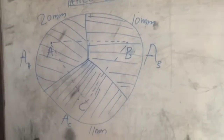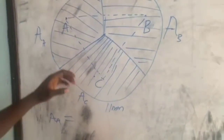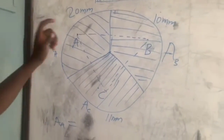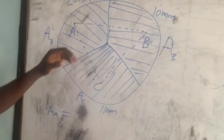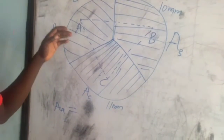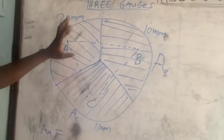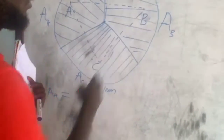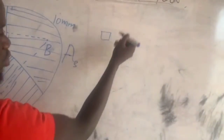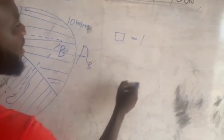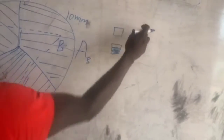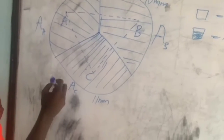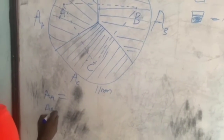Sometimes area A will be given in the question, but if not given, draw the areas on your graph sheet. All complete full boxes count as one, and more than half of a box also counts as one. You count all full boxes and boxes more than half, then combine them to get the area. You do this for area A, area B, and area C respectively.